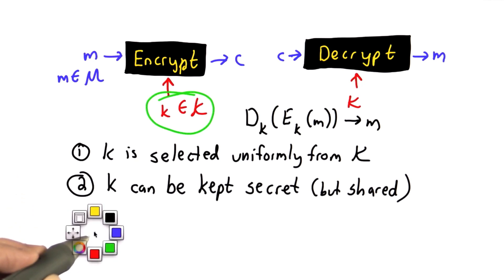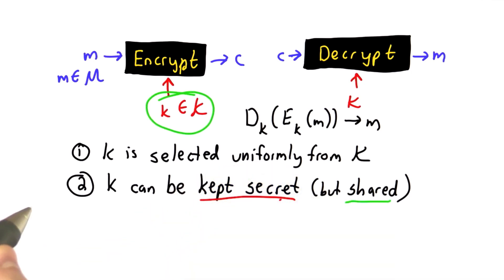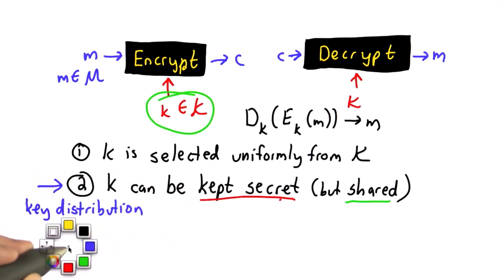The other big assumption about the key is that it can be kept secret. The adversary can't learn the key, but it can be shared between the two endpoints. This is a big challenge. We're not going to look at that yet this unit. We'll get to that later. This is the big problem of key distribution, which we'll talk about starting in unit 3. Now I want to talk about this first problem, that we need to select a random key.